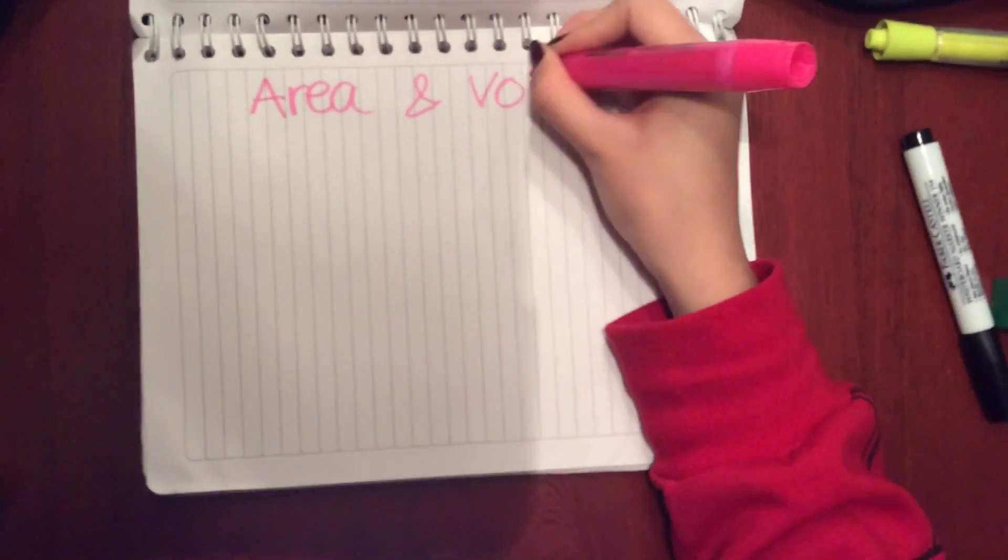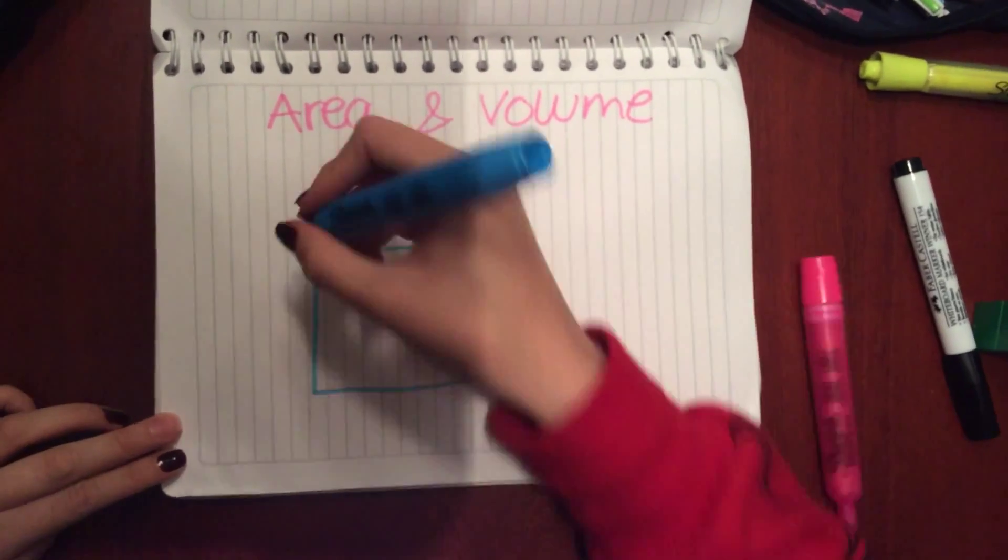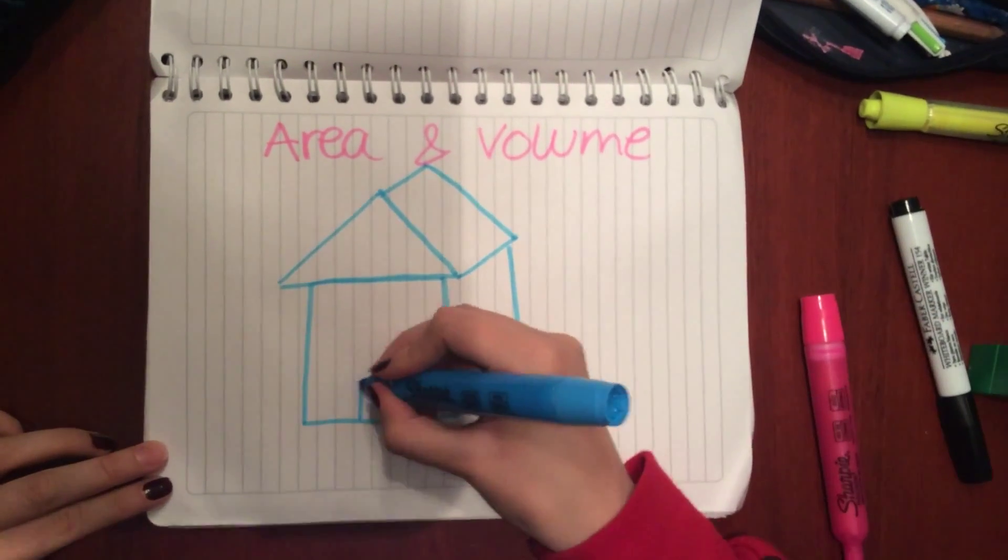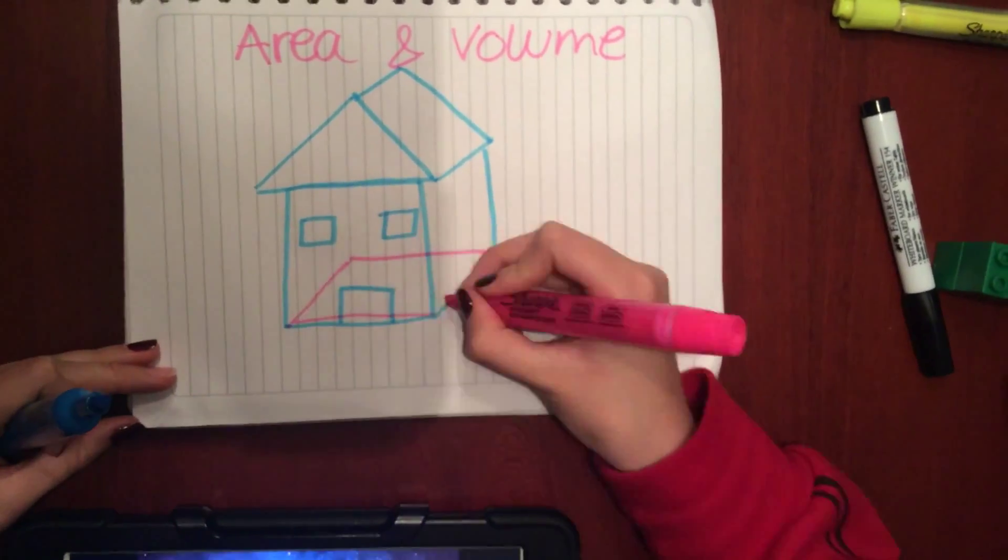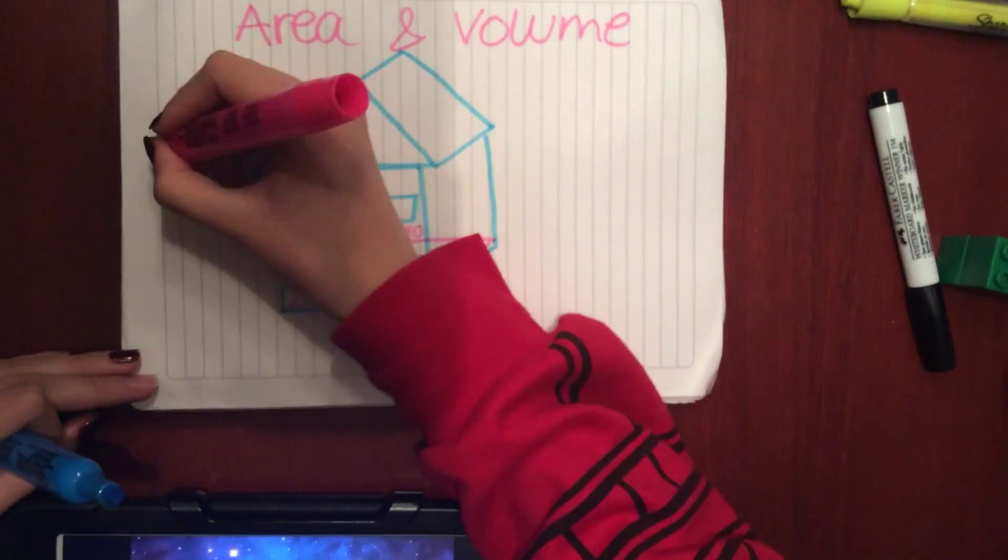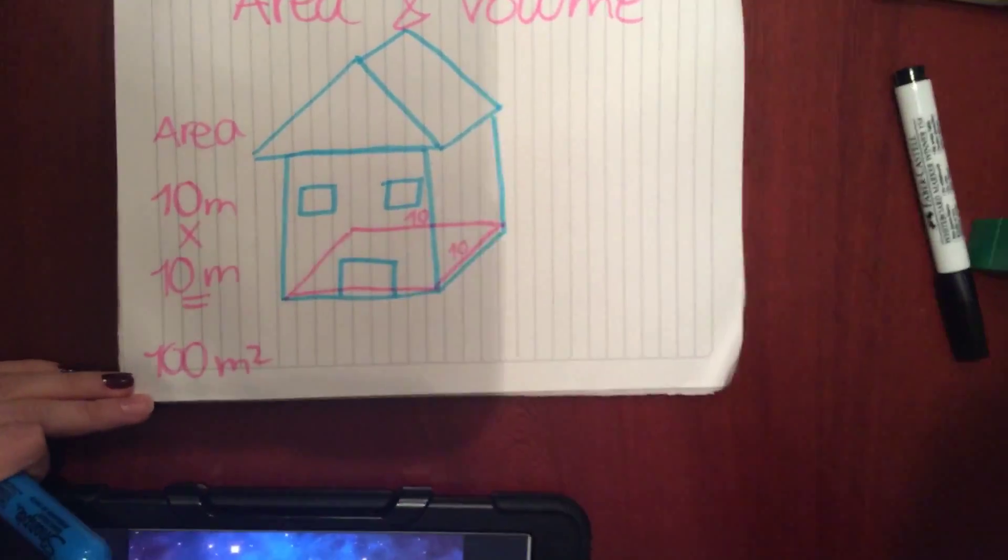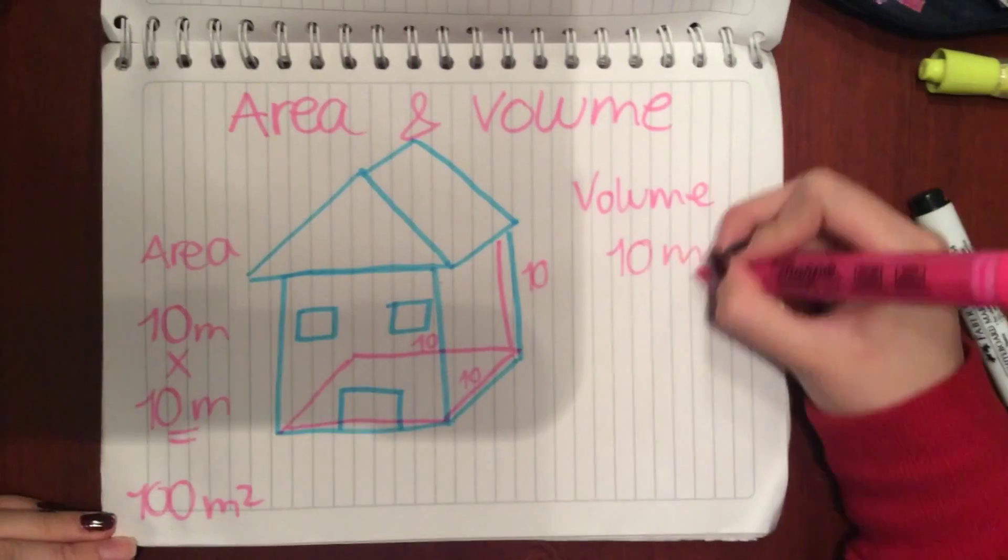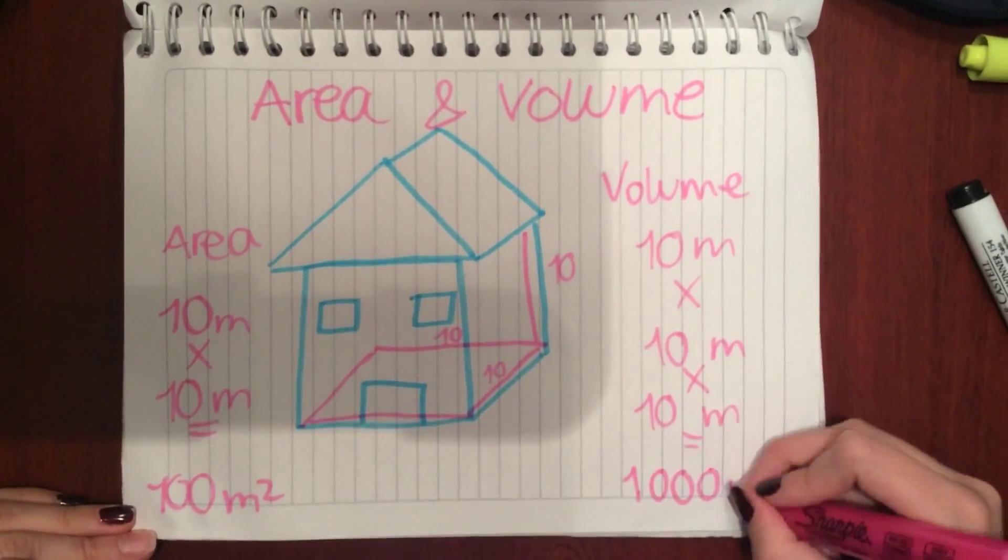Our last example of using exponents in real life is area and volume. Here we see a house. We can see that area is calculated by multiplying two of its sides, length and width. This will give us a result of meters squared. Then for volume we will multiply three of its sides: height, width and length, to give us a result with a unit of meter cubed.